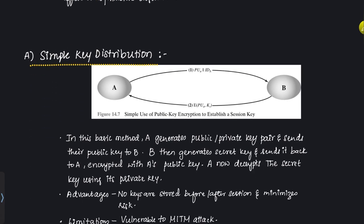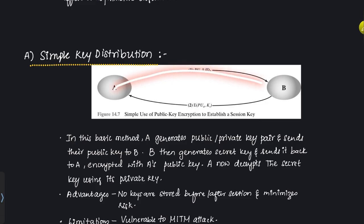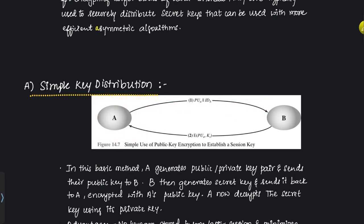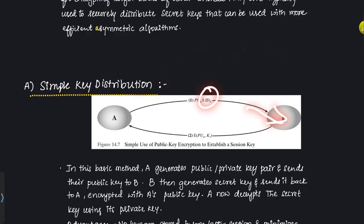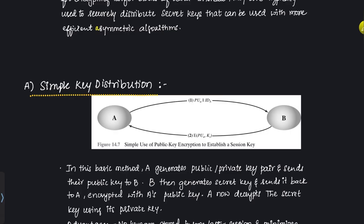In simple key distribution, there are two steps. First, user A will generate a pair of keys — PUA (public key) and PRA (private key) — and will send PUA along with ID_A, the identifier of A, to user B. This allows user B to have user A's public key, which is needed to send an encrypted message back to A. Next, user B will generate and transmit a secret key KS encrypted with A's public key PUA.